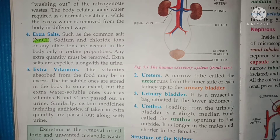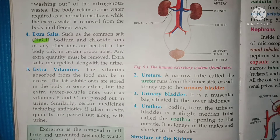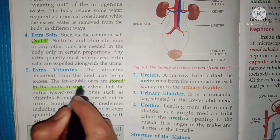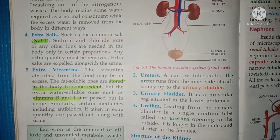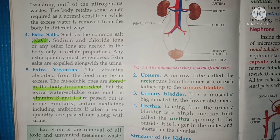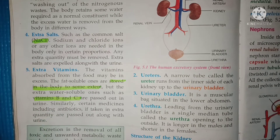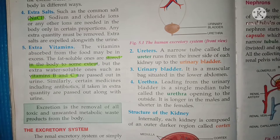Excess vitamins should also be removed. Fat-soluble vitamins are stored in the body to some extent, but the extra water-soluble ones such as vitamin B and C are passed out in the urine. Similarly, certain medicines including antibiotics, if taken in extra quantity, are also passed along with the urine because these medicines are water-soluble. In summary, excretion is the removal of toxins and unwanted metabolic waste produced in our body.